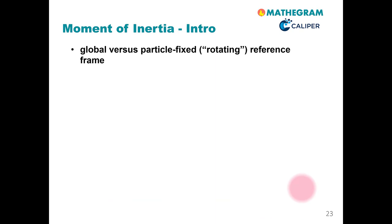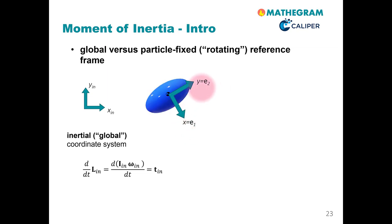Hence, we have to look into the difference between a global and a particle-fixed rotating reference frame. Here, again, the global or inertial frame. Here we have our relatively simple angular momentum balance equation that looks like this. We transfer now this balance equation to the particle-fixed or rotating reference frame, that is oriented such that it coincides with the axis e1 and e2 of the particle under consideration.